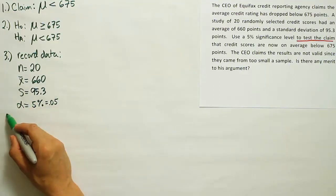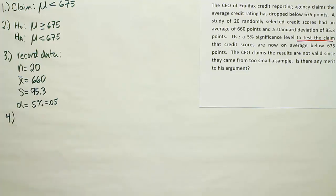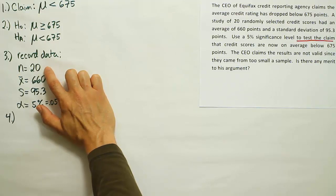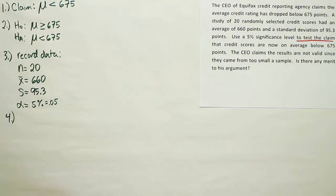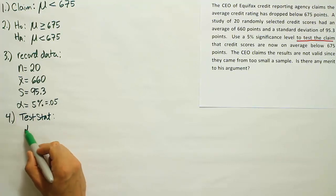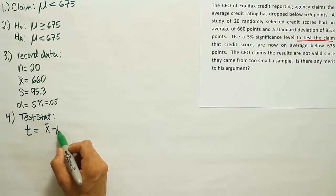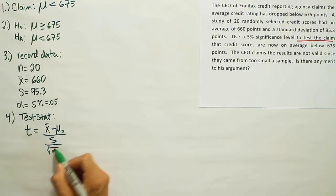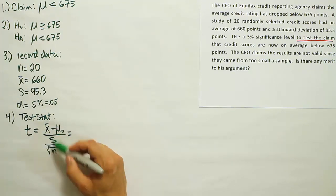So in step four, we're going to take this data and plug it into a test stat. Now, first thing you do before you go to use a test stat formula is to identify whether you have a large enough sample size to use Z. If it's a small sample size like this one, under 30, we're going to use T instead of Z. In reality, this doesn't change very much. It's still going to be X bar minus mu sub zero divided by the standard deviation divided by the square root of N.